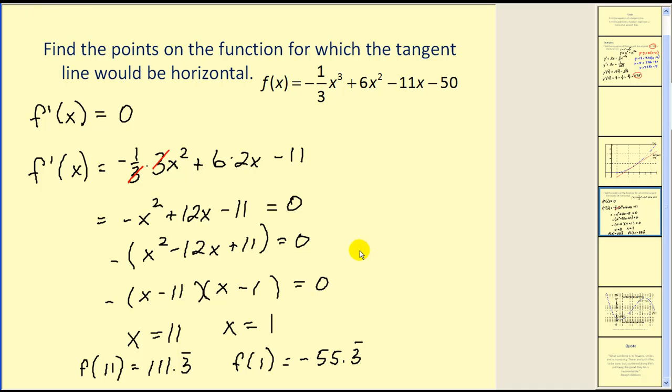So the coordinates of the points where the tangent lines would be horizontal are (11, 111.3 repeating) and (1, negative 55.3 repeating).